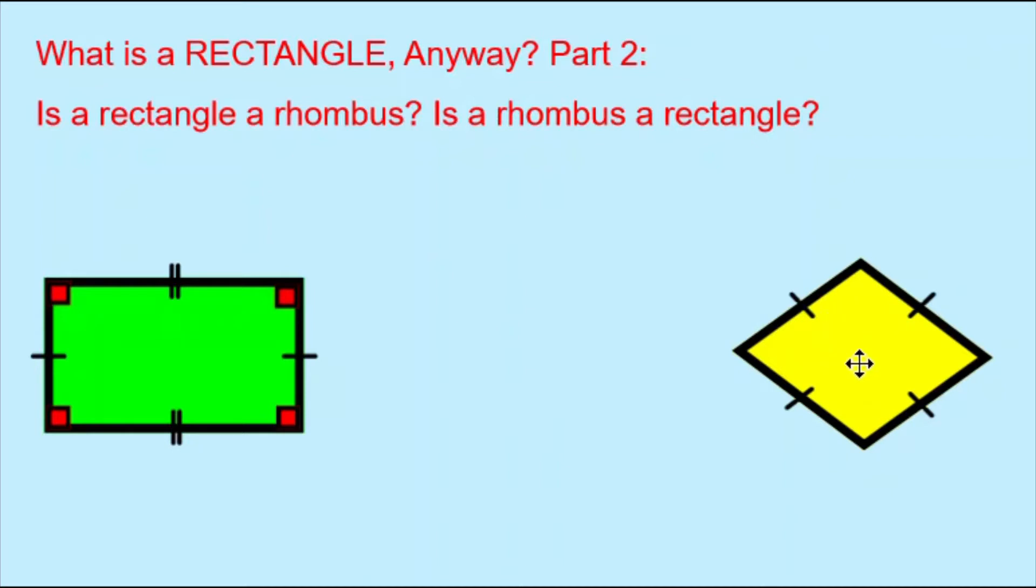We have a yellow rhombus here. We can see it's a rhombus because we have these little lines on the sides, which are indicating that these four sides are all equal in length. Our green rectangle has similar lines on the two short sides. They're equal in length to each other, but the double lines on the long sides are showing us that these two sides are equal to each other, but are not equal in length to the short sides.